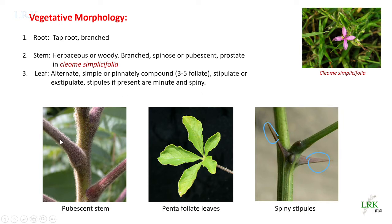The stem surface bears white, small hair-like structures with a woolly texture — we call this a pubescent stem. So pubescent stems are seen in this family. Sometimes the stems also have spine cells, so spinose and pubescent stems are both present.